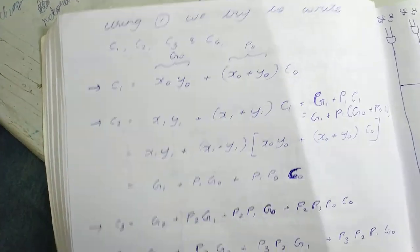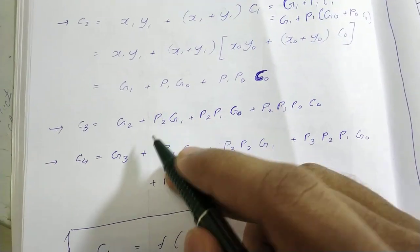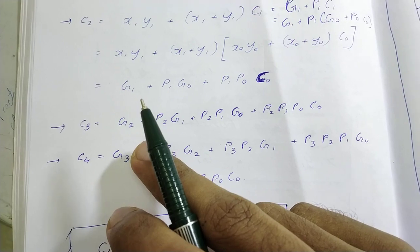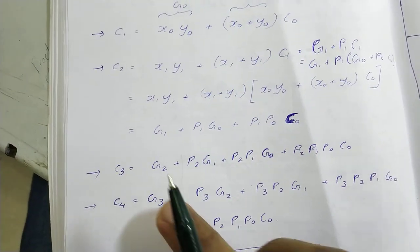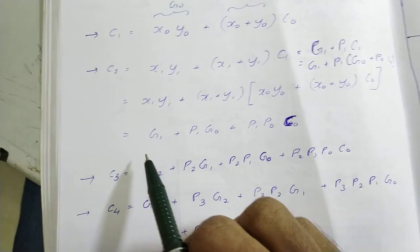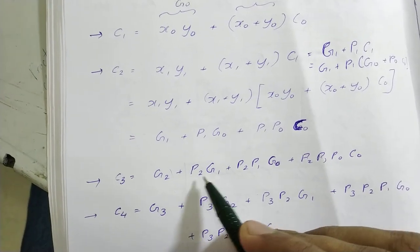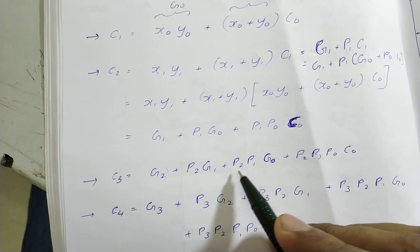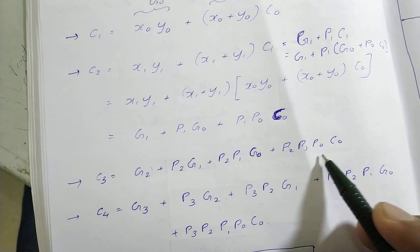Likewise we can find out for c3. For c3 also, if we carry on the same way, we get g2 plus p2 g1 plus p2 p1 g0 plus p2 p1 p0 c0.